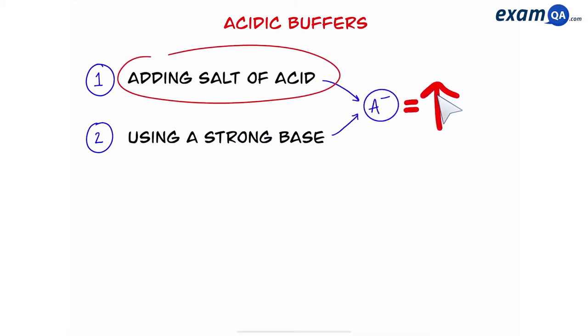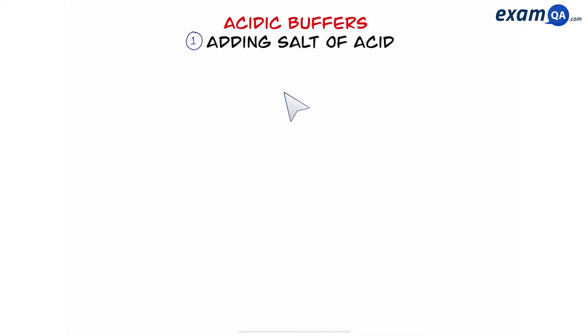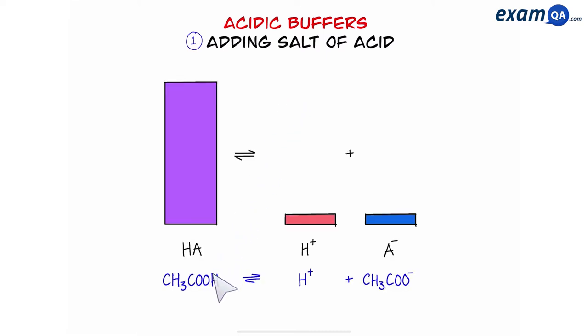In this video we're going to be talking about the first method and doing a practice calculation. So we're going to be adding the salt of a weak acid to the weak acid itself. So here's our example weak acid. We're using ethanoic acid which breaks down into hydrogen ions and ethanoate.